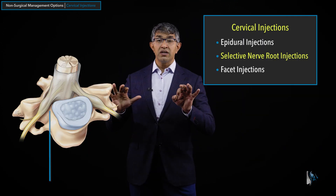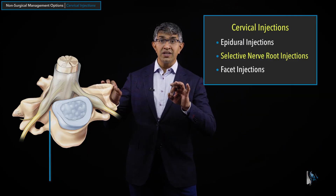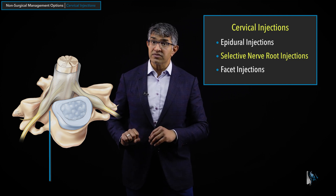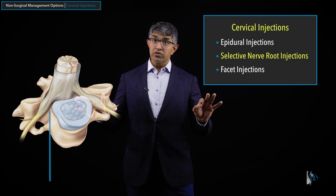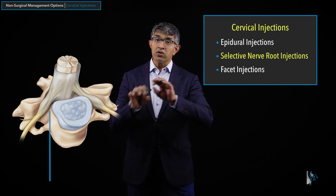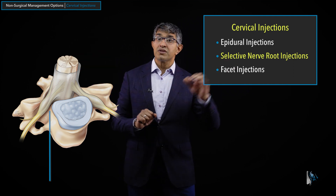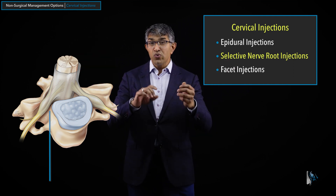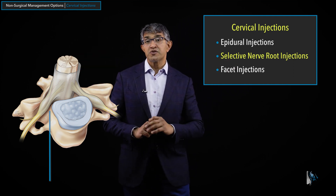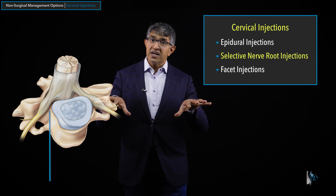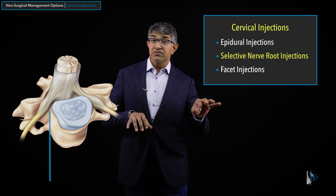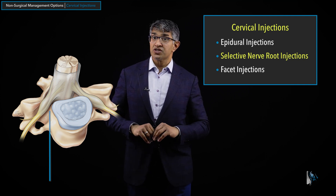If you're trying to get a nerve on the right and the left, that's usually two different injections — one on the right and one on the left. An epidural injection, by contrast, is usually in the middle and can canvas the area to reach nerves on both sides. Which injection makes sense depends a lot on the clinical scenario, but that is on a high level what a selective nerve root injection is.